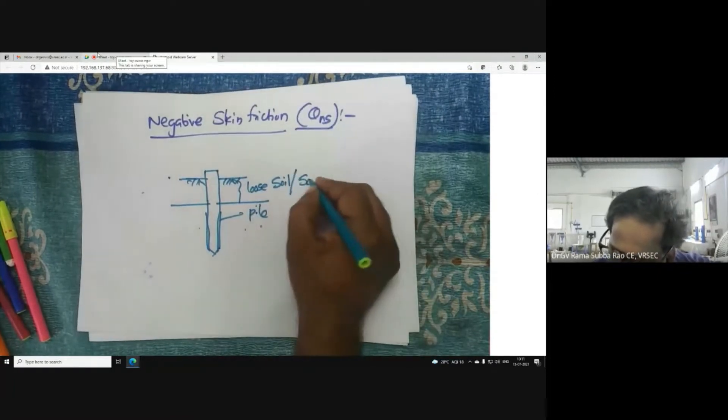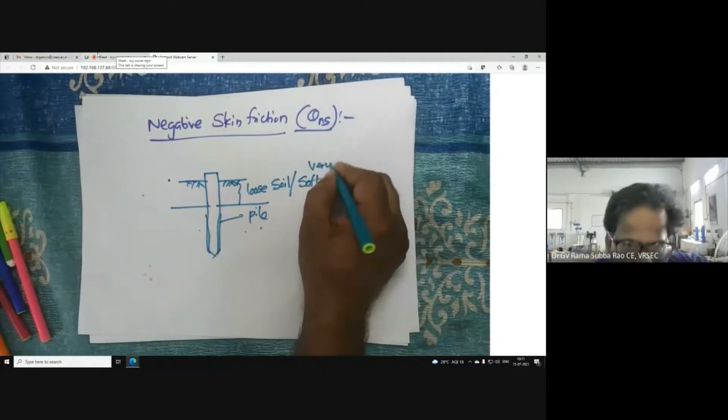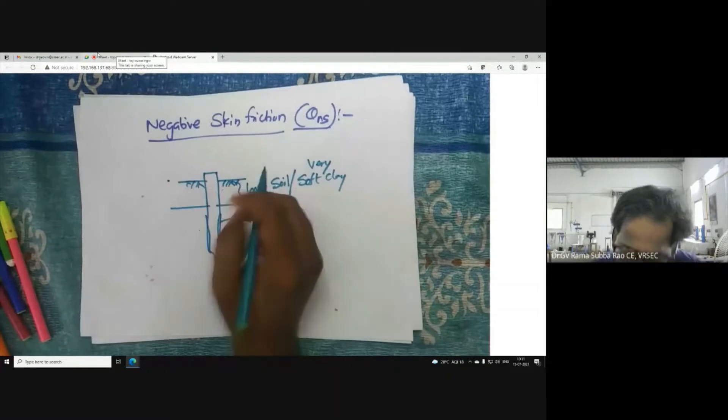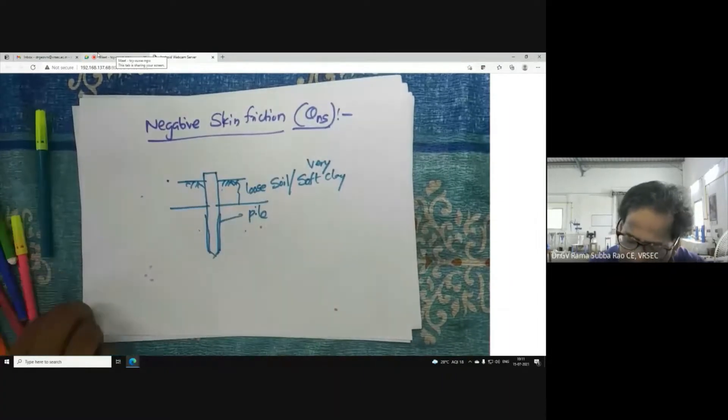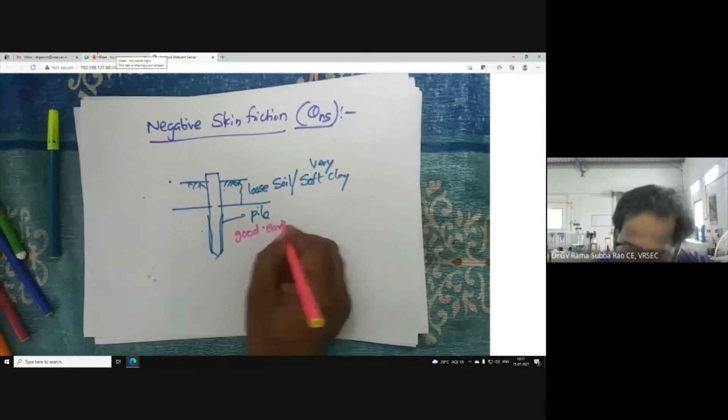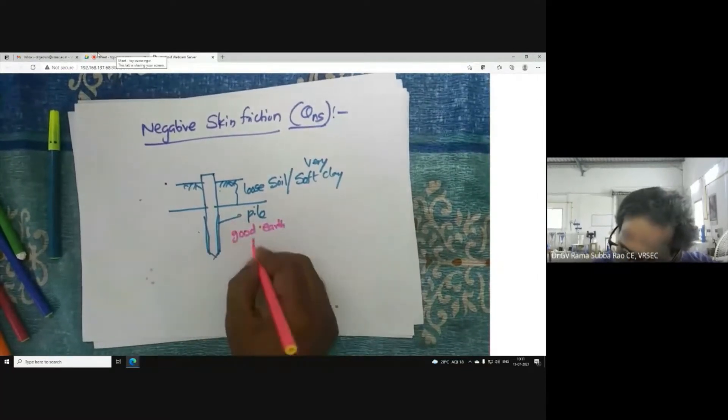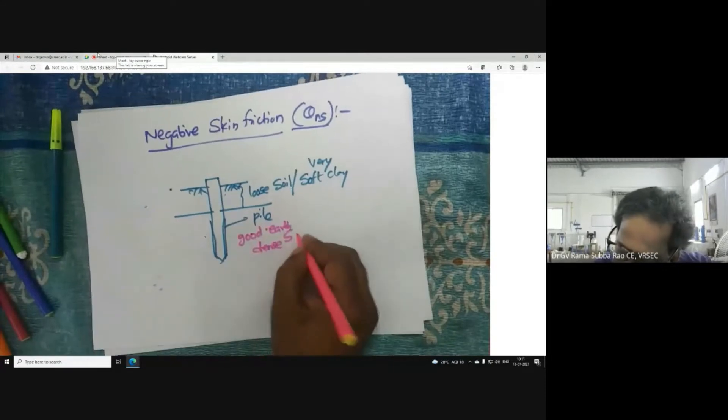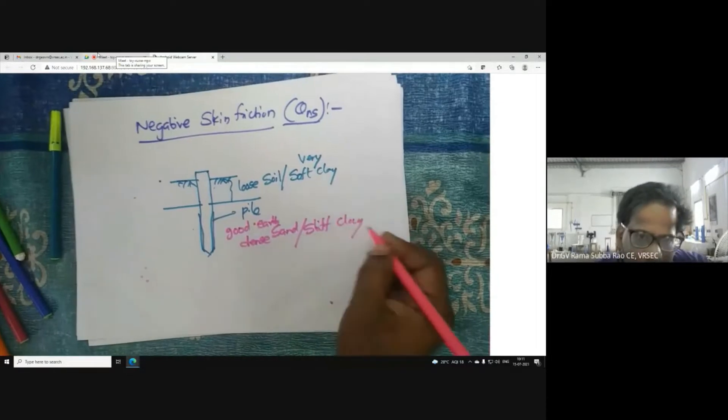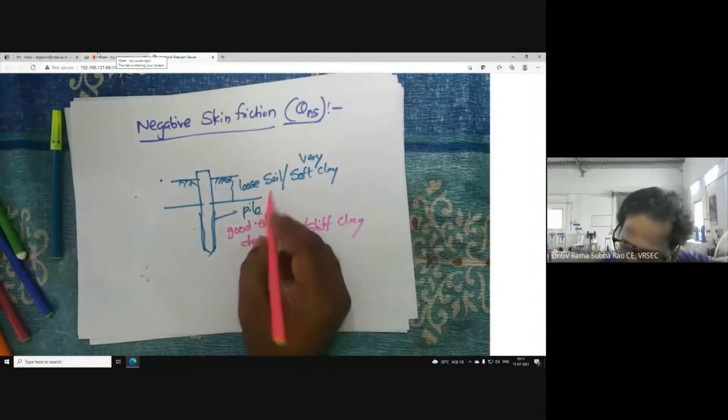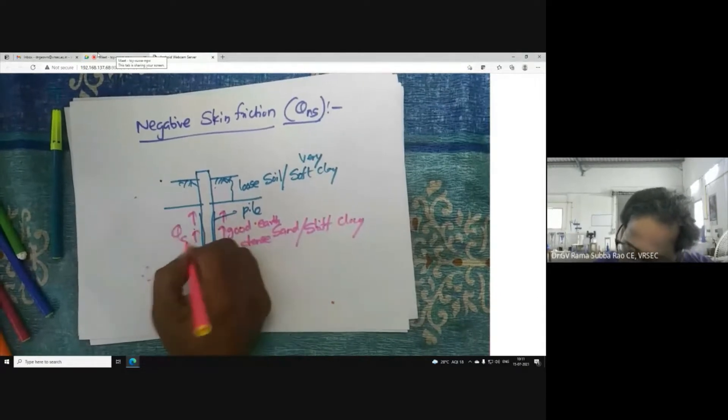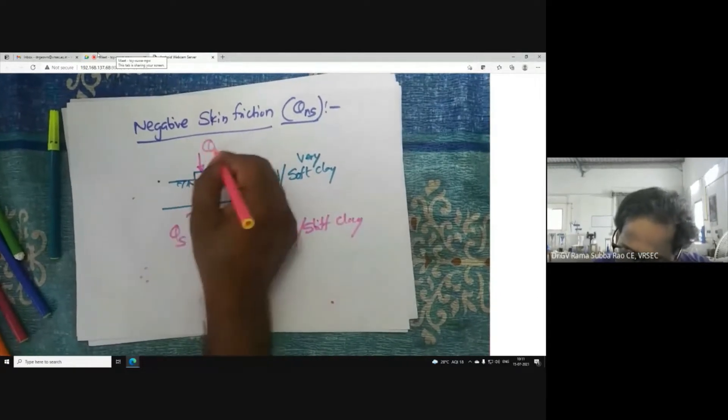Sometimes you see very soft clays where we cannot expect positive skin friction. What is good earth? That means dense soil, dense sand, or stiff clays where you may expect positive skin friction. This is your ultimate law.